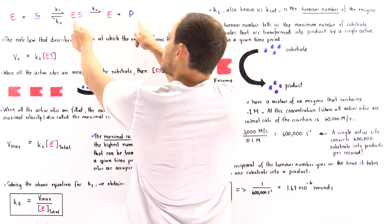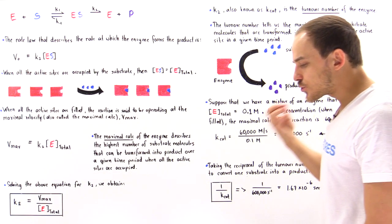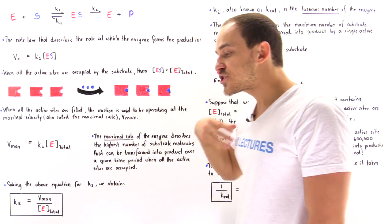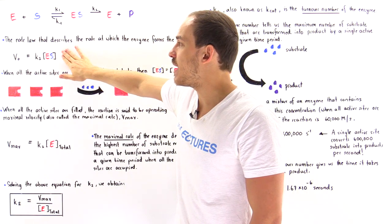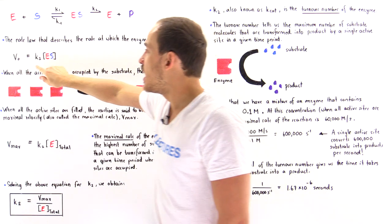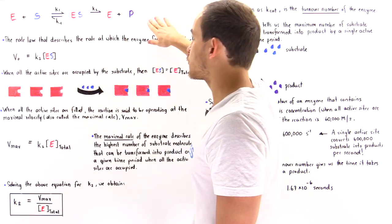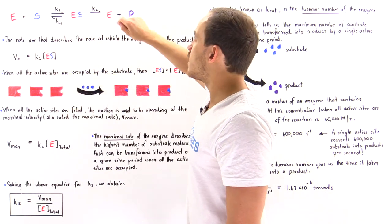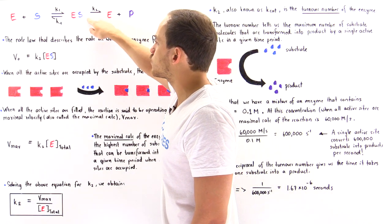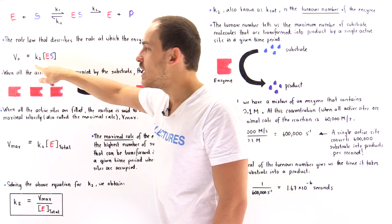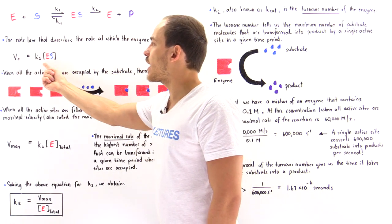Focusing on the catalytic reaction, there is a rate law describing the rate at which this reaction takes place. The rate V₀ — the rate at which the enzyme catalyzes the reaction — is equal to the product of rate constant K2 and the concentration of the enzyme-substrate complex ES. This equation describes the rate at some concentration of ES.